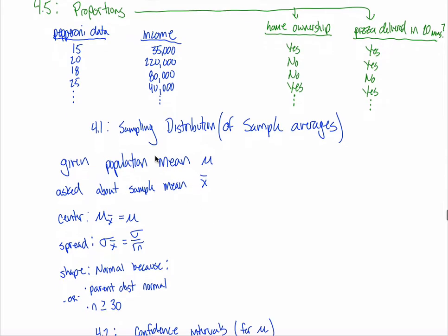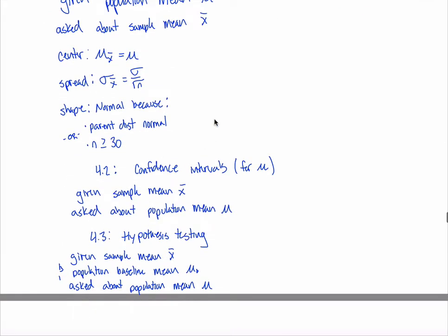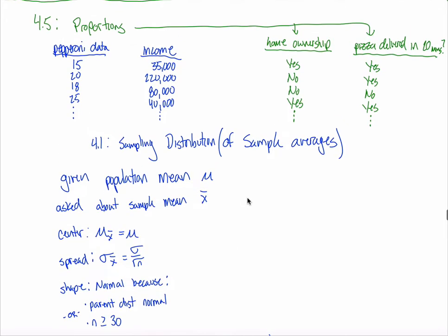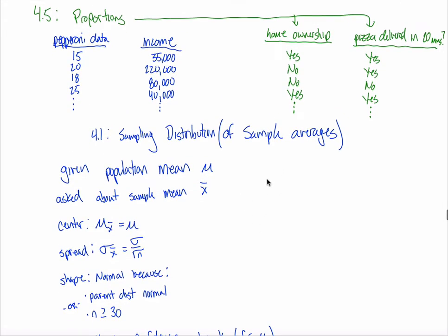Because the data itself is inherently different, everything we do is going to be a little bit different. But the good news is, if you had a decent grasp of 4.1, 4.2, and 4.3, there is a 4.5 version of all those things. Most students find 4.5 to be the single hardest thing in this class — proportions are just challenging, harder than working with means.